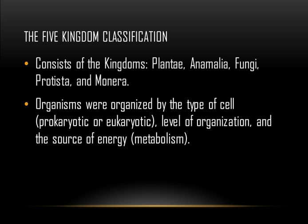First off, let's go over the five-kingdom classification. For many years, biologists have used this classification, consisting of the kingdoms Plantae, Animalia, Fungi, Protista, and Monera. Organisms were organized by the type of cell — for instance, prokaryotic and eukaryotic — the level of organization, and the source of energy, which is metabolism.